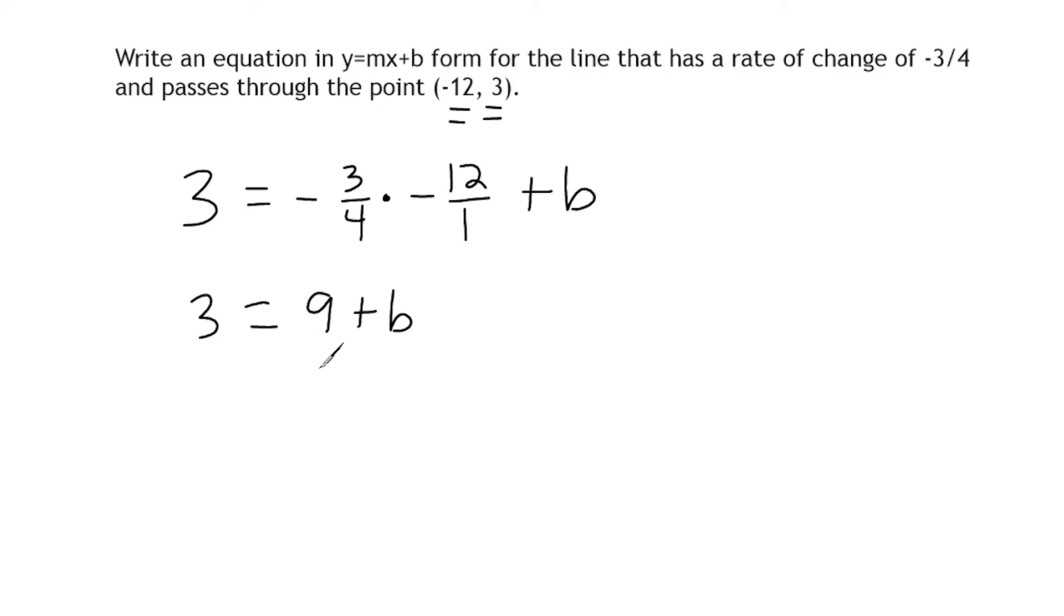So if I do the opposite of adding 9, that would be subtracting 9 from both sides. And what we have on the left-hand side here would be negative 6. And on the right we just have our variable b. So now we know that the y-intercept would pass through the y-axis at negative 6. So we would write our equation as y equals negative 3 fourths x minus 6.